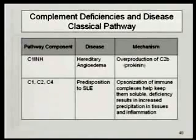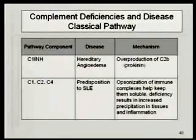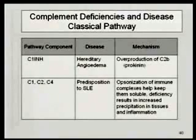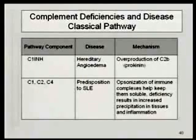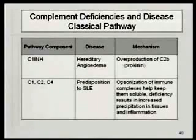I just want to finish off a little bit more on complement, some complement deficiencies, and the effects of diseases associated with them. A deficiency in C1-INH, the major controller of the classical pathway, results in the disease hereditary angioedema, because of overproduction of the C2-B kinin. There are also patients with deficiencies of the complement components C1, 2, and 4.